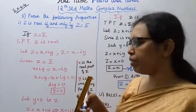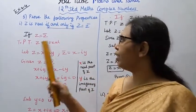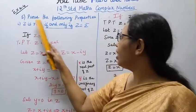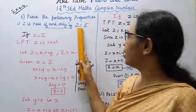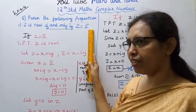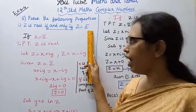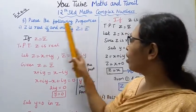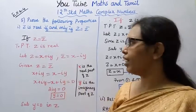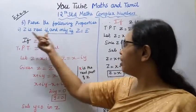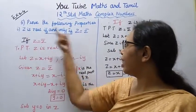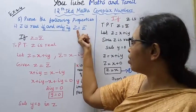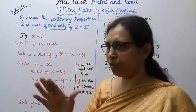We need to prove two things: if z is real, then z equals z̄; and if z equals z̄, then z is real. Both directions of this biconditional proof will be established.